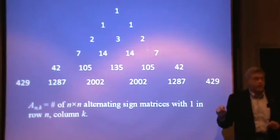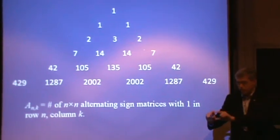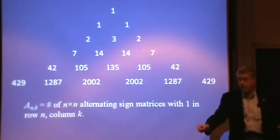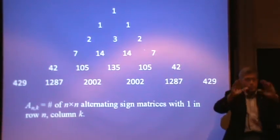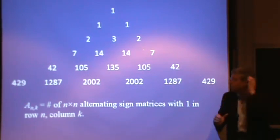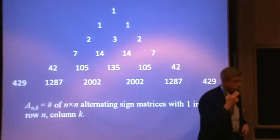If you think about it, it's not hard to see why that's true. Because if I've got a one in the lower left-hand corner, the rest of the bottom row has to be zeros, the rest of that column has to be zeros. And so the number of alternating sign matrices is just the number of alternating sign matrices of one smaller size. So the first number in each row is the sum of the entries in the row above it.